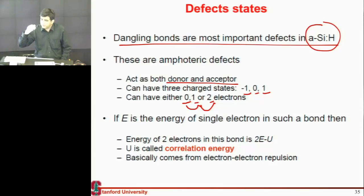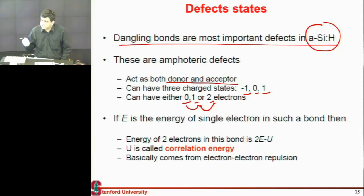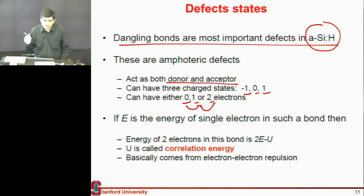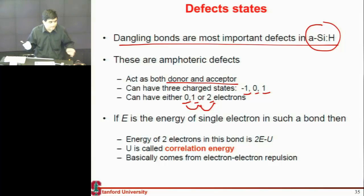Most of the amorphous silicon or thin film technology shows a larger degradation when you use them in light. Remember problem set one when you were calculating that LCOE — the cents per kilowatt hour. You took that degradation factor. That degradation factor is much higher for panels made of thin film materials, because these amorphous material bonds will break as you expose them to light.